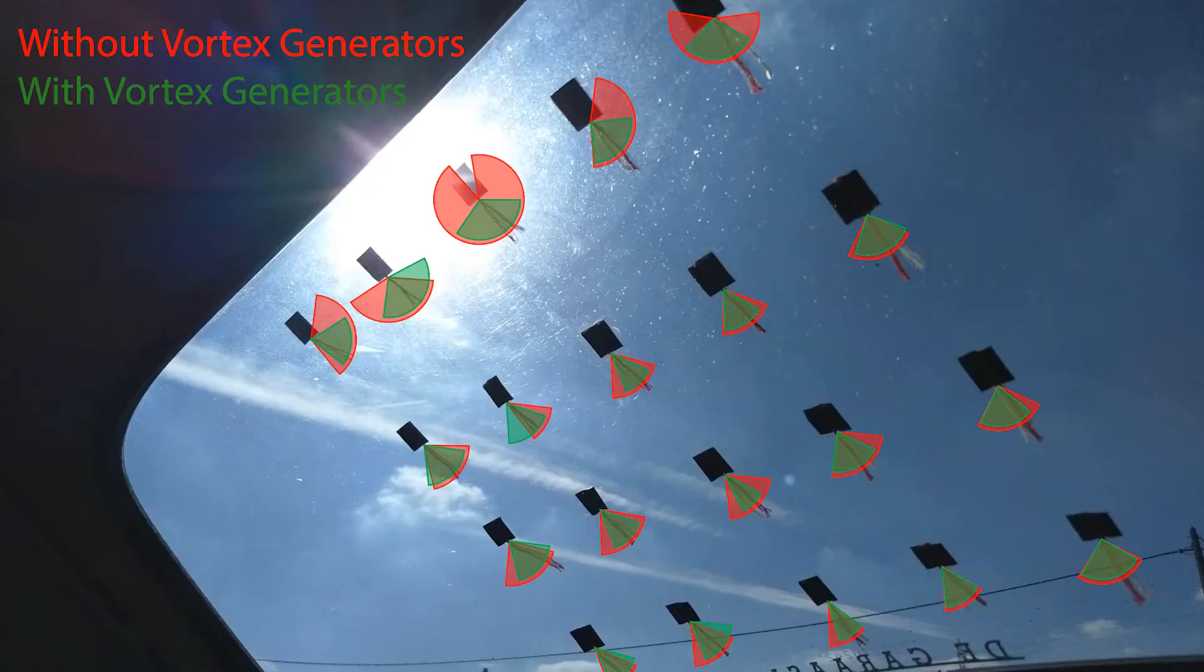By mapping the movement range of each individual tuft, we were able to compare both setups. Without the vortex generators, we saw a lot of movement and even reverse flow along the entire width of the top line of tufts. With the vortex generators installed, we saw that this movement was much reduced and reverse flow was even eliminated.